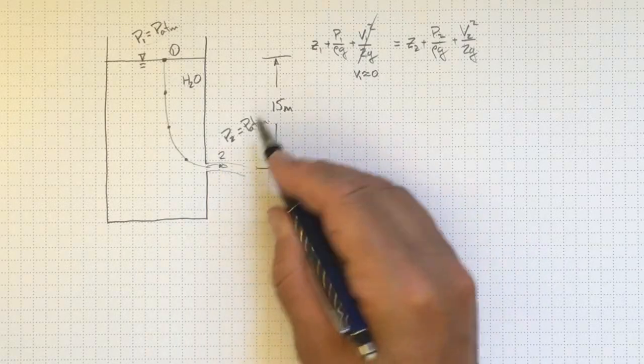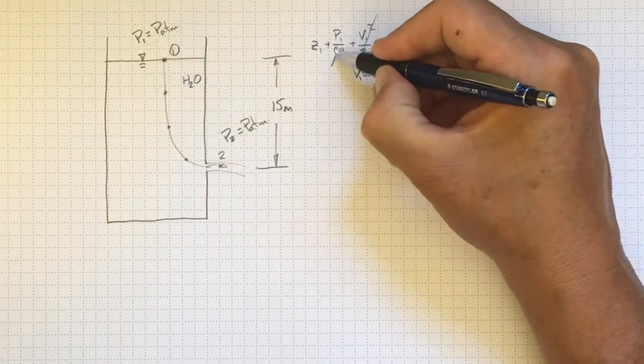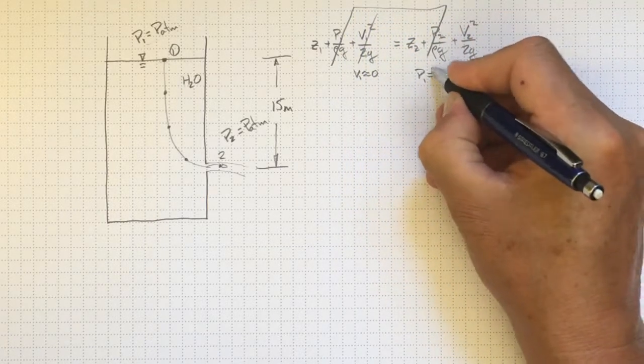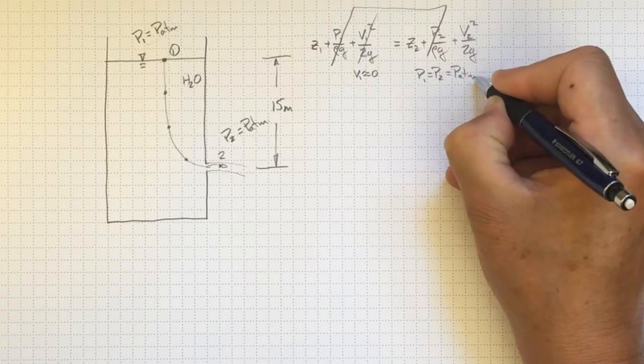Pressure at two is atmospheric. Pressure at one is atmospheric. So those two pressures are the same. P1 equal to P2 equal to atmospheric pressure.